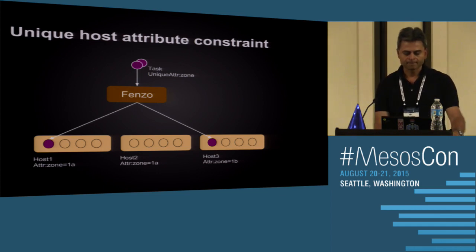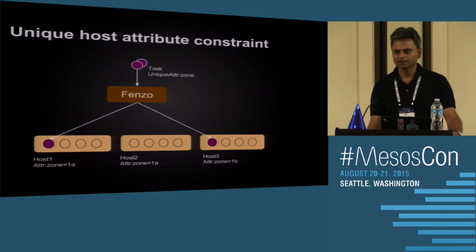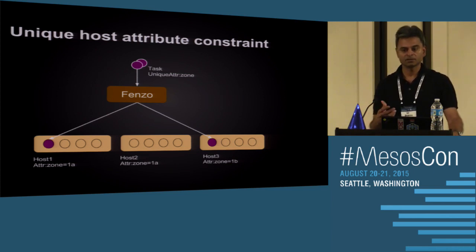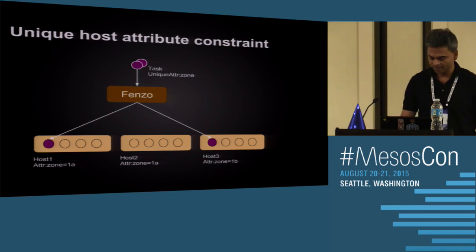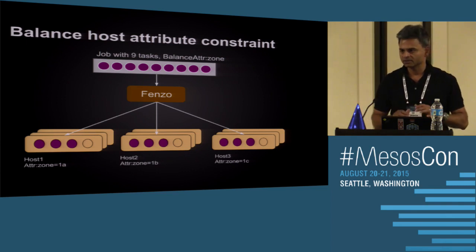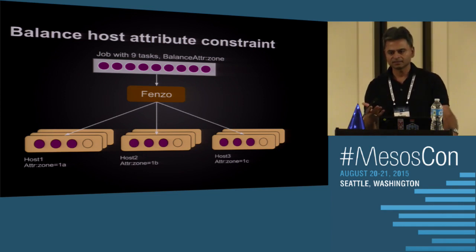The unique host attribute constraint also works as a soft constraint. If I have three zones and zone three has an outage, with a soft constraint tasks distribute across available zones rather than waiting. With a hard constraint, the task waits for the zone to come back. There's also a balanced host attribute constraint — not requiring unique values, but balancing tasks across racks or zones. For nine tasks across zones in EC2, FENZO automatically balances them.